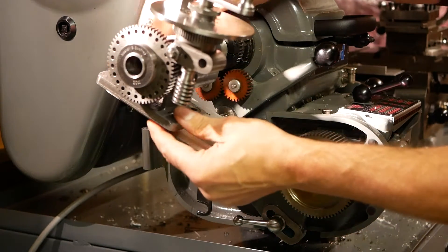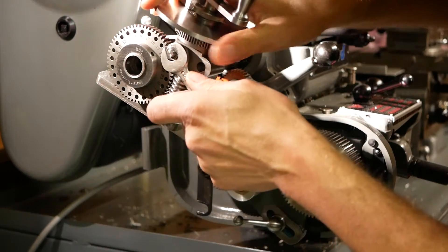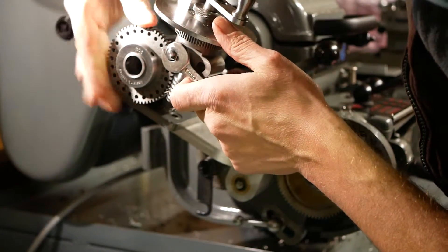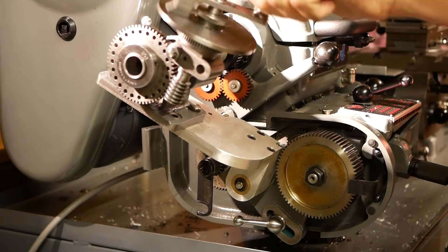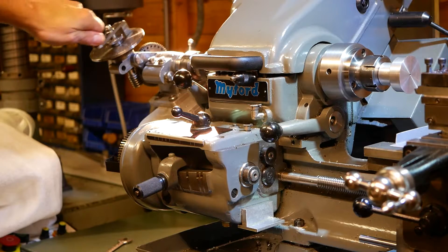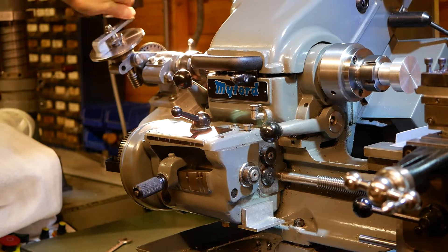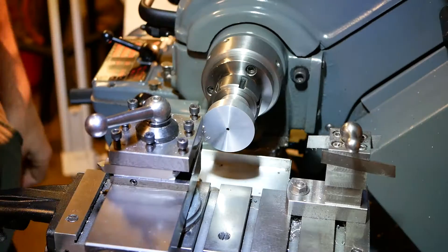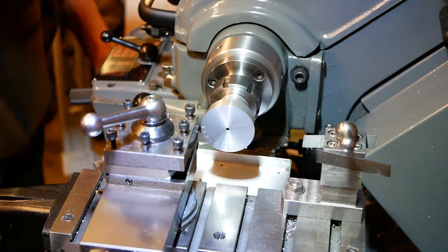To engrave the divisions all you need is a v-tool mounted on its side in the tool post.